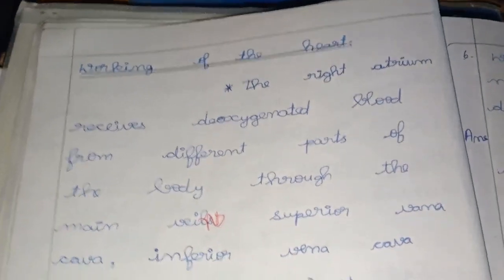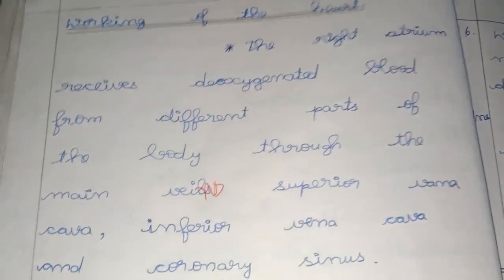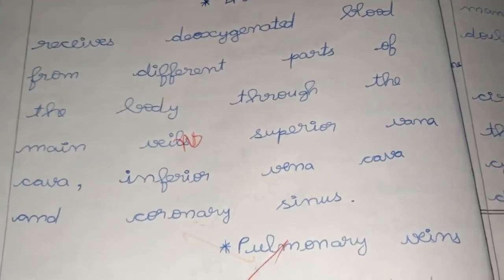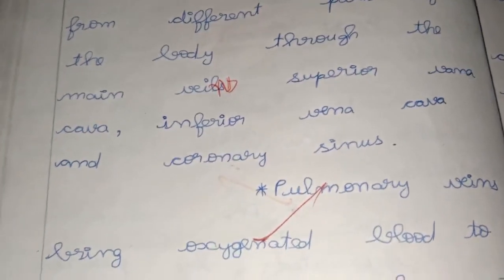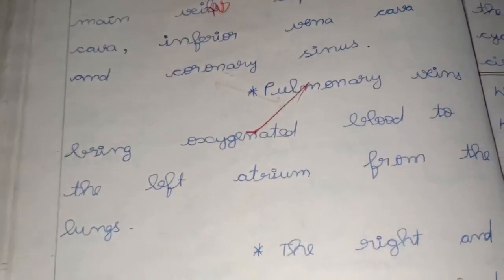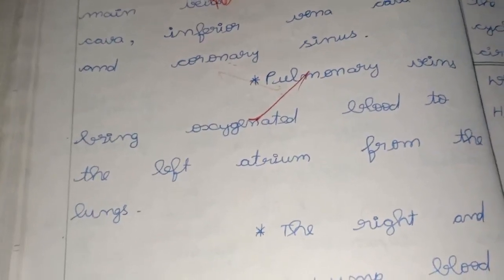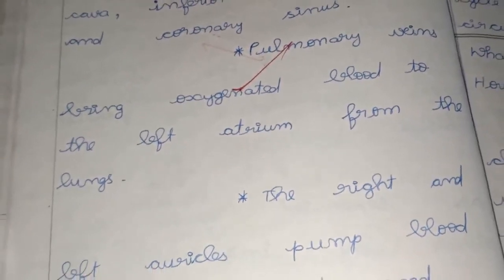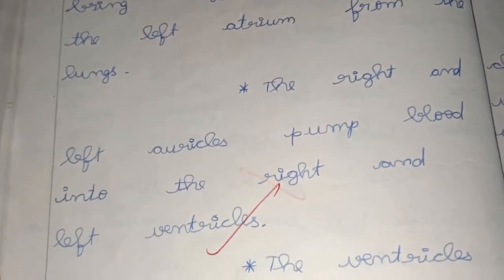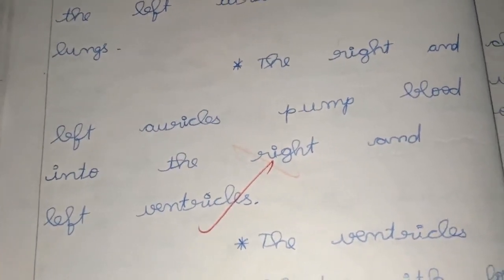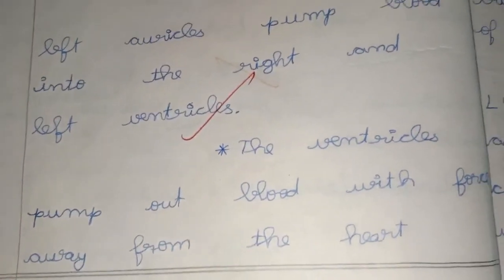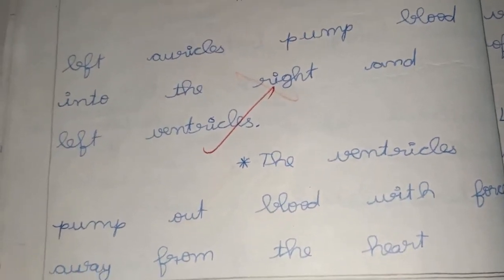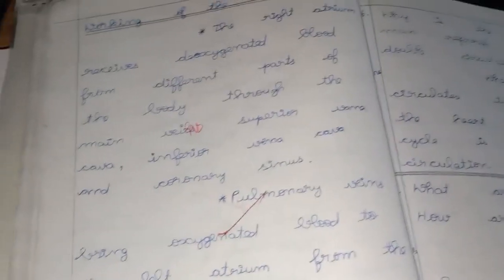Now coming to the working of the heart. The right atrium receives deoxygenated blood from different parts of the body through the main veins — the superior vena cava, inferior vena cava, and coronary sinus. Pulmonary veins bring oxygenated blood from the lungs to the left atrium. The right and left auricles pump blood into the right and left ventricles. The ventricles pump out blood with force away from the heart.